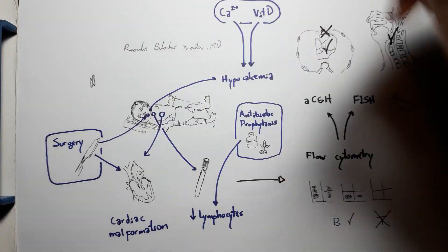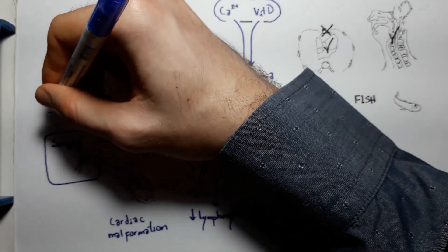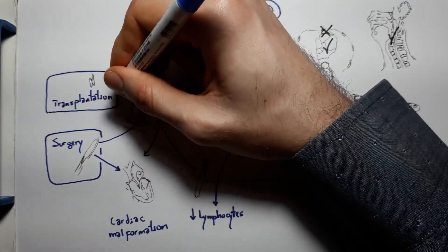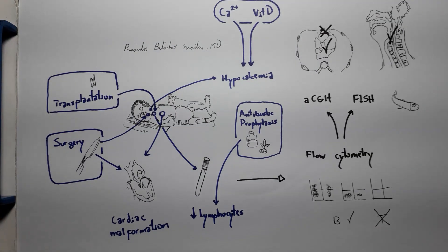Keep in mind as well that, just as with so many other immunodeficiencies, live vaccines are typically contraindicated in patients with 22q11.2 deletions. They are also contraindicated in other household members, since they can shed the live organisms to the patient.